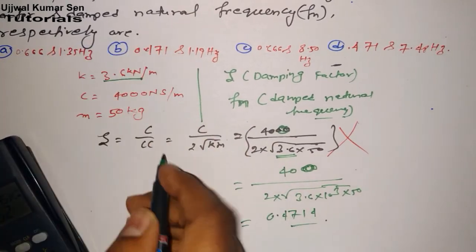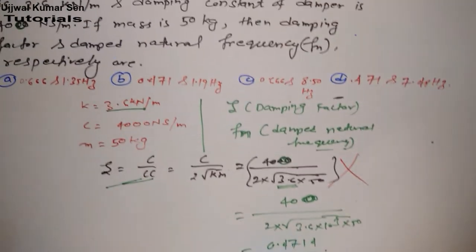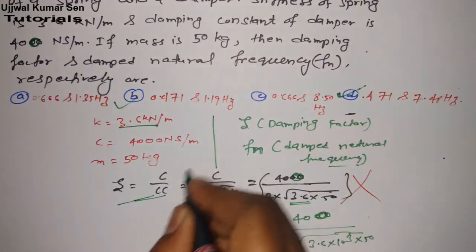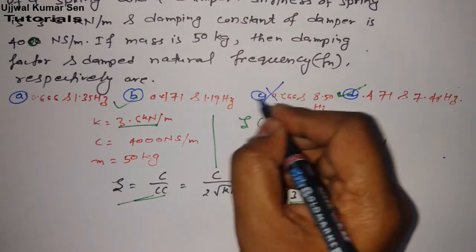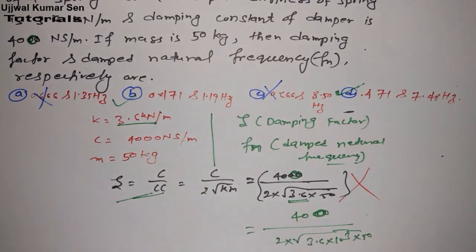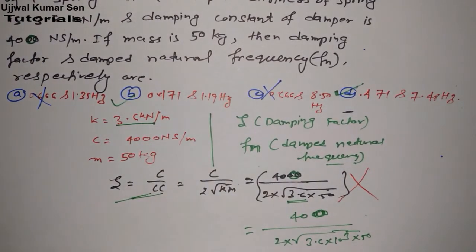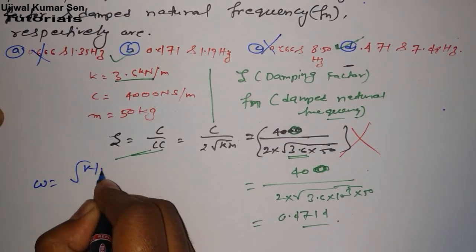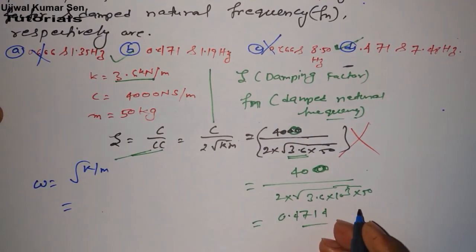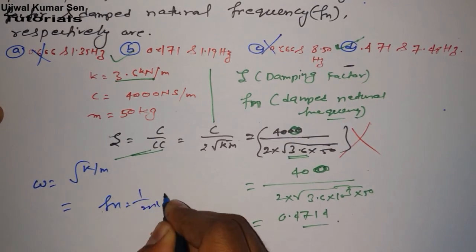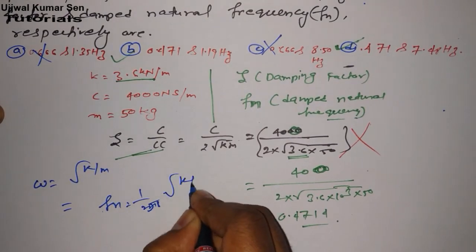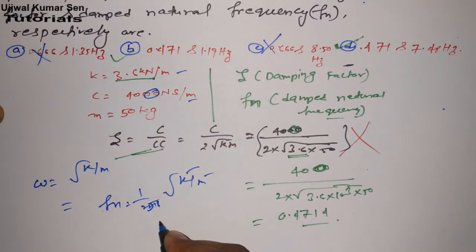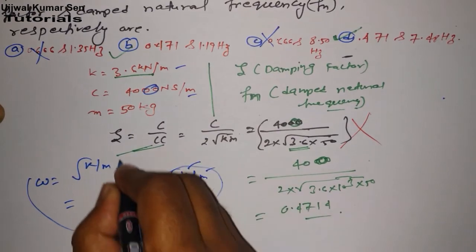What is this? Damping factor. Now see the option. We have two options where we can match this: B and D. That means automatically C and A are wrong answer. Now what exactly you are going to do? You are going to find ω = √(K/M). Or you will use fn = (1/2π)√(K/M). You will put these values because already given and you will get answer. But that is the wrong approach.